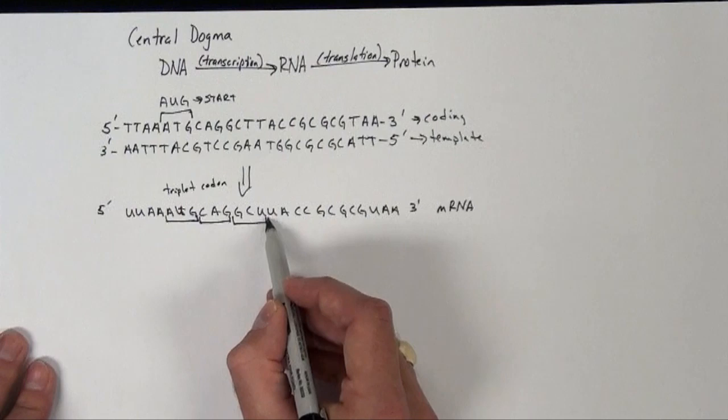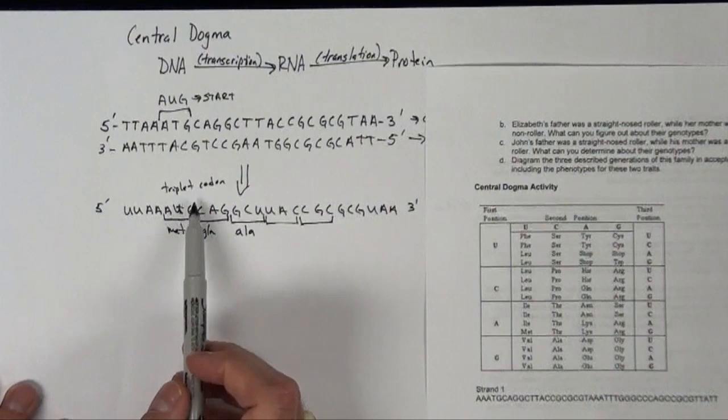So here I'm just breaking it down into groups of 3. So let's go through this. What I'm going to look for is my start codon, or the AUG, and that's the amino acid methionine.